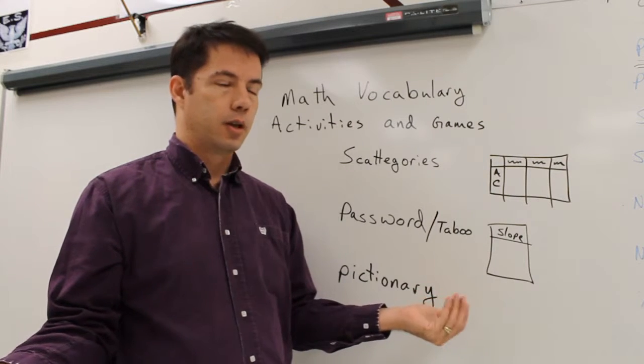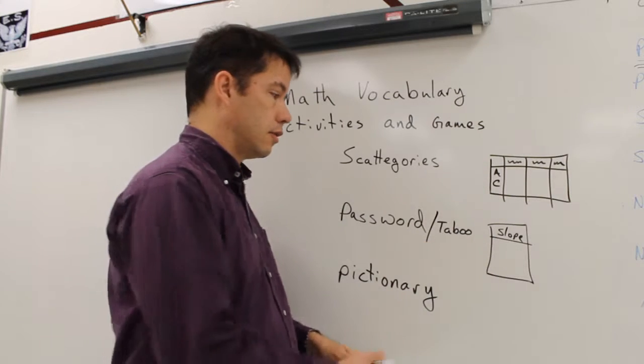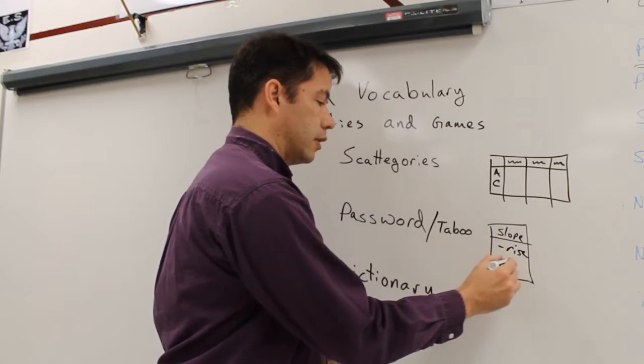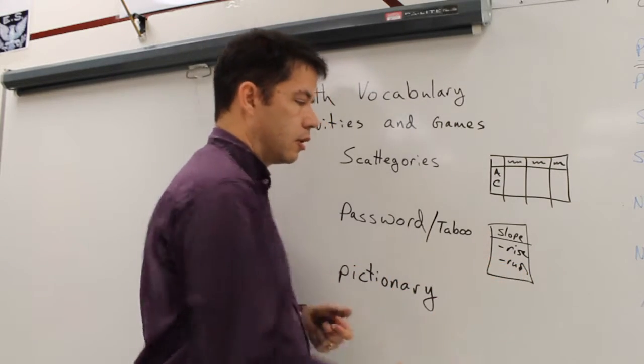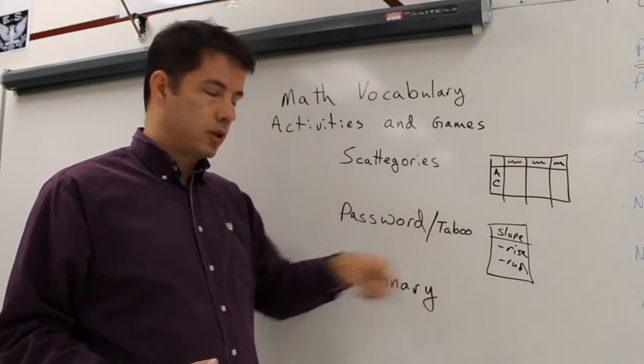So with slope and taboo, you could write rise over run and the person giving the clues can't say those words. I'm going to show you some different ways you can do that.